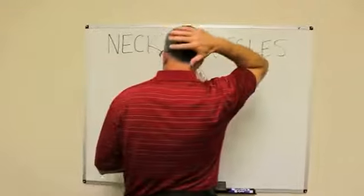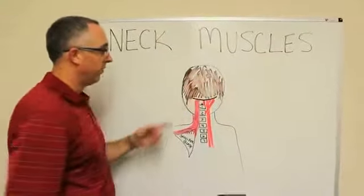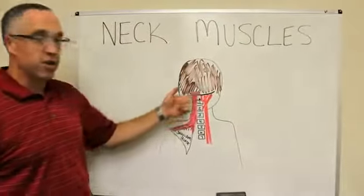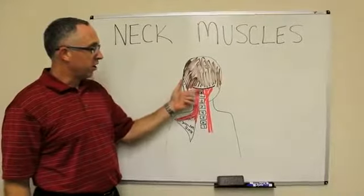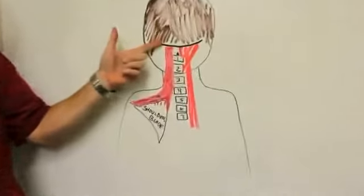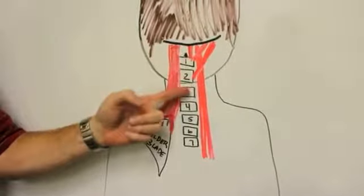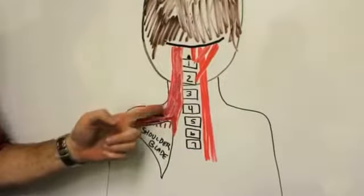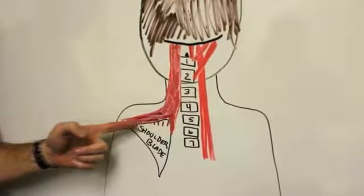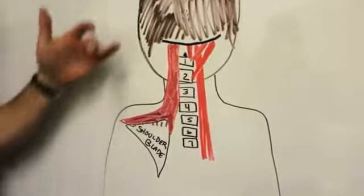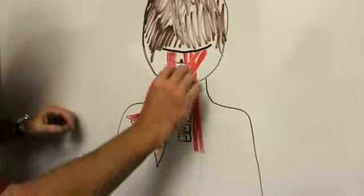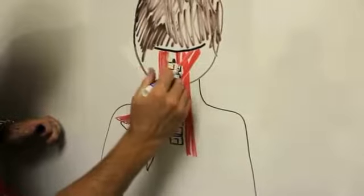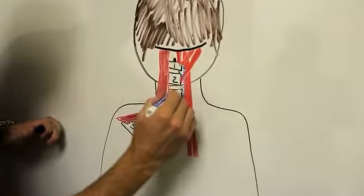So this is a picture of the muscles in your neck. You're looking at yourself from behind — this is the back of your head right here. This black line is the base of your skull, and then these are the muscles in your neck. All of the muscles in your neck originate from that spot at the base of your skull and they run to the vertebrae in your neck, alongside the vertebrae, or to your shoulder blade.